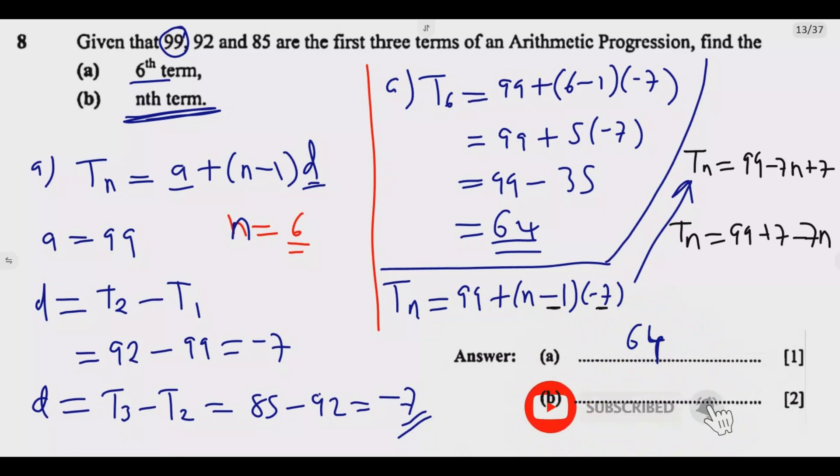So Tn equals 99 plus 7 minus 7n. I've collected the positive term with the right term, so 99 plus 7 minus 7n. Simplifying, 99 plus 7 is 106, so we have Tn equals 106 minus 7n as our answer.